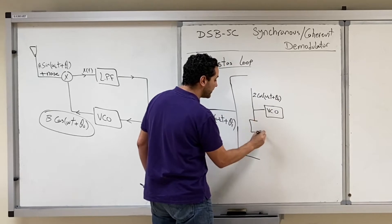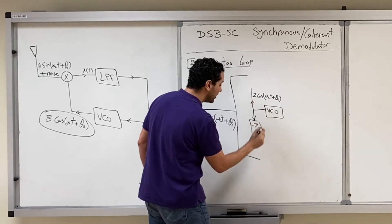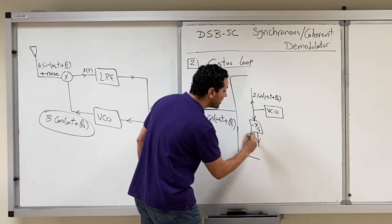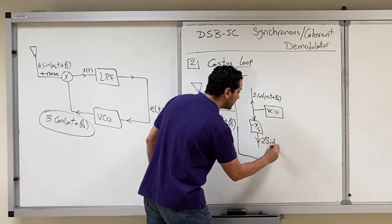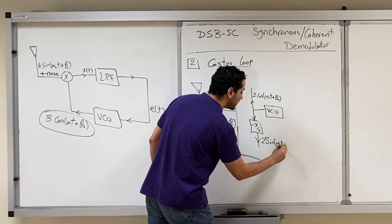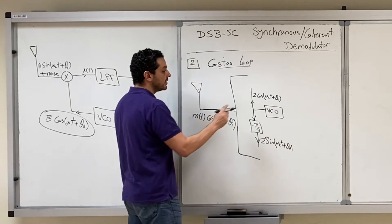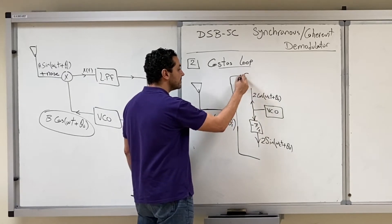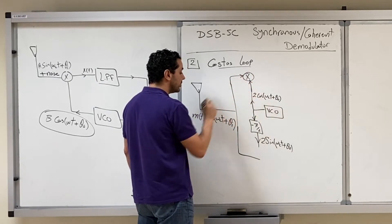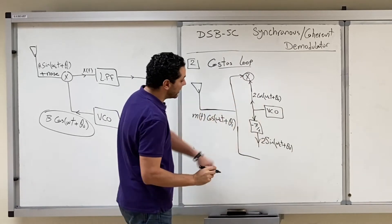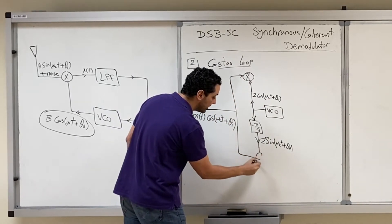We shift the VCO output by −π/2 to get 2·sin(ωc·t + θ₀). Then, one copy of the received signal is multiplied by 2·cos(ωc·t + θ₀), and another copy of the received signal is multiplied by 2·sin(ωc·t + θ₀).